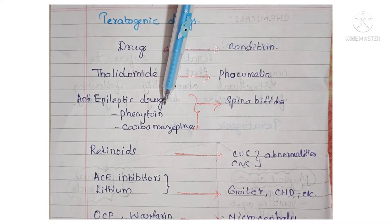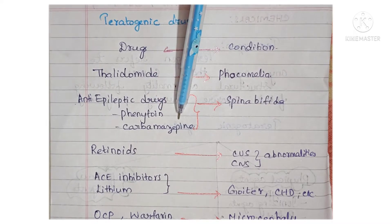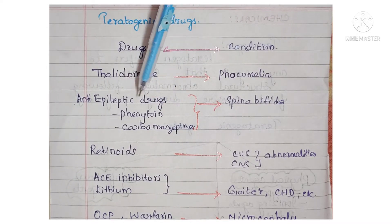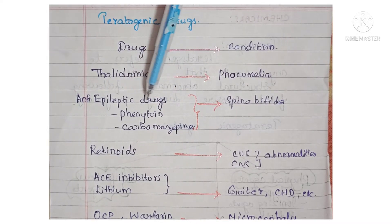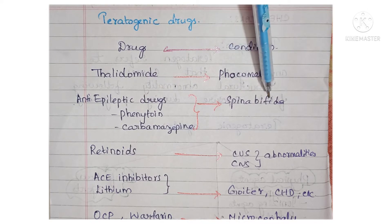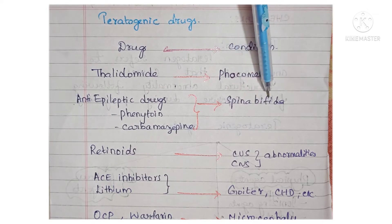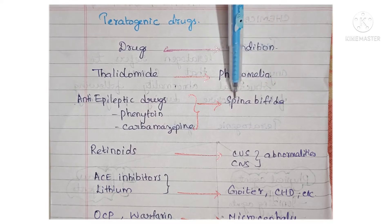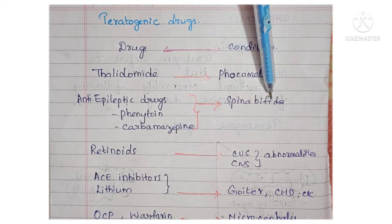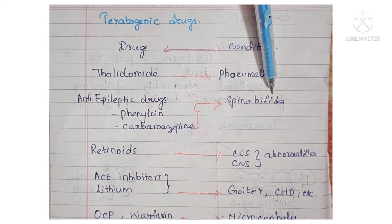Some anti-epileptic drugs like phenytoin, valproate, and carbamazepine, when taken during pregnancy by the mother, can lead to abnormal spine development in the child. That is spina bifida — where the spine will not be closed or developed properly.